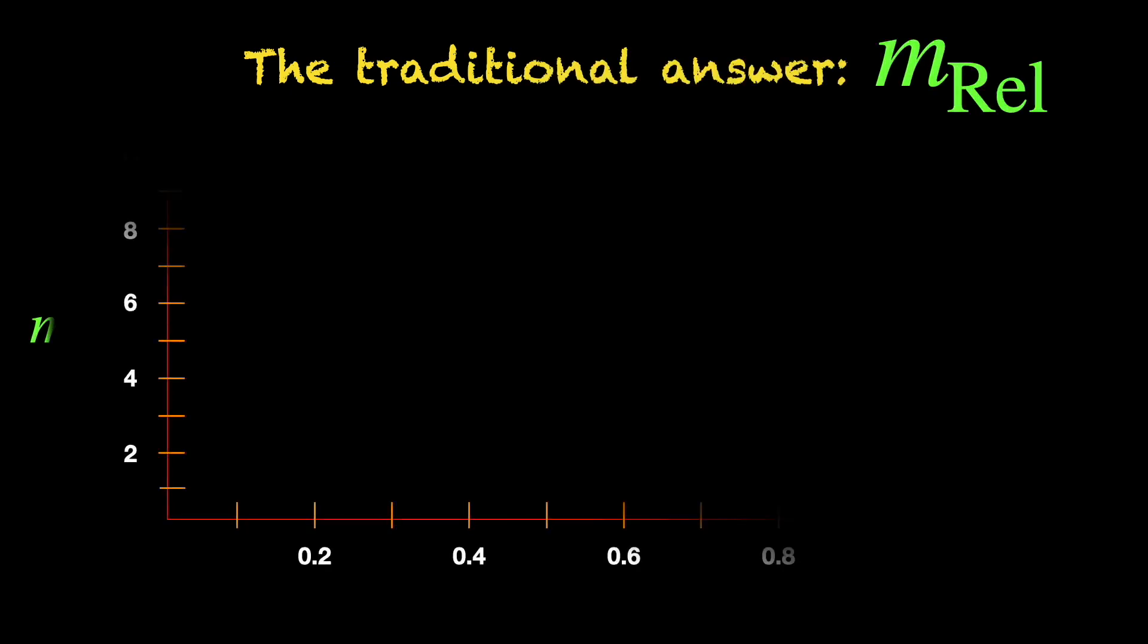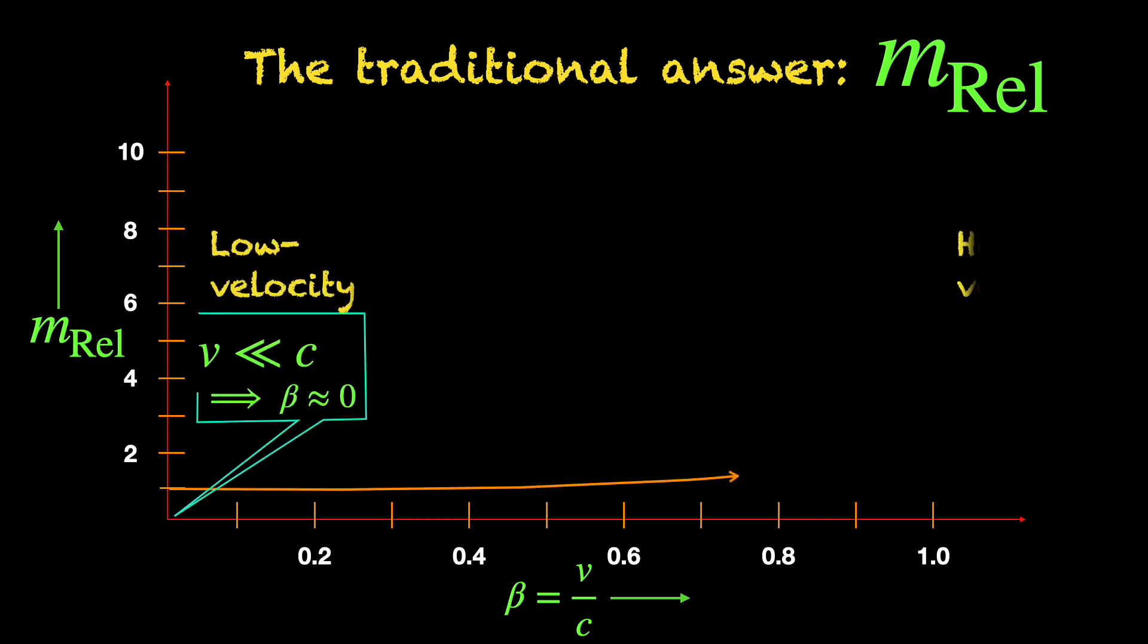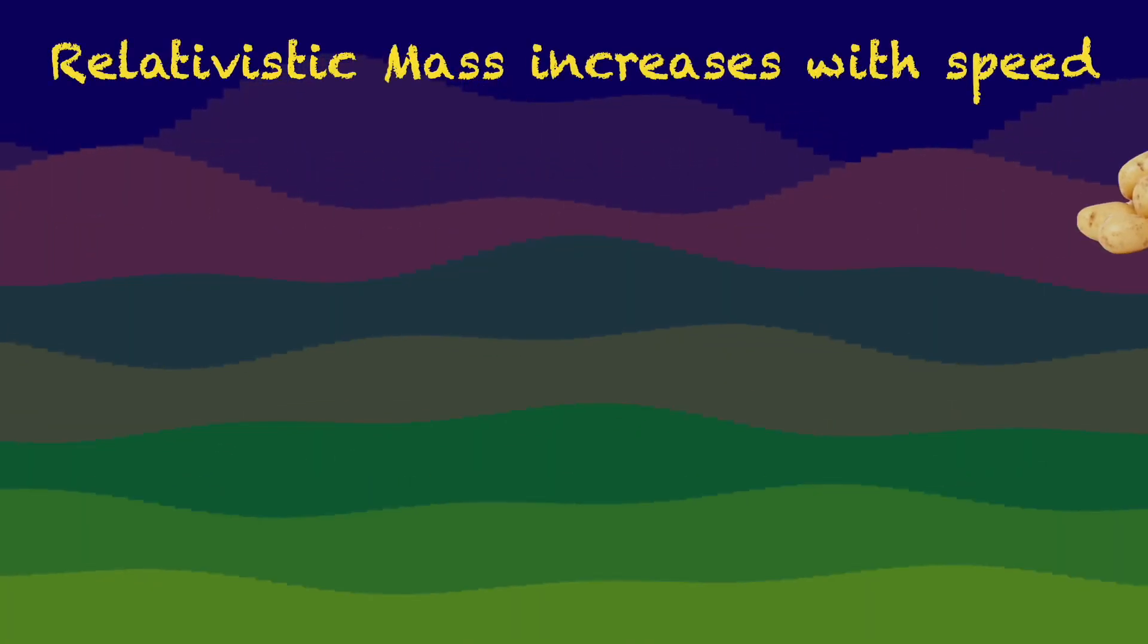The traditional answer to this question utilizes the concept of the object's relativistic mass which diverges to infinity as the object's speed grows closer and closer to the speed of light. This means the faster the object moves, higher grows its relativistic mass.